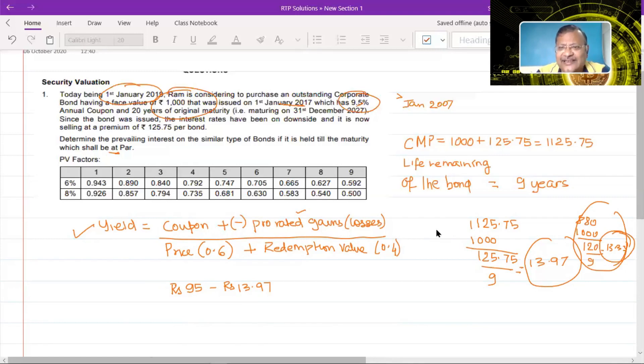Now this is just an example I gave in case the bond was quoting at a discount, but in this case, the bond is clearly quoting at a premium. So we don't need to look at this. In this case, the investor is going to incur a loss of 13.97 every year.